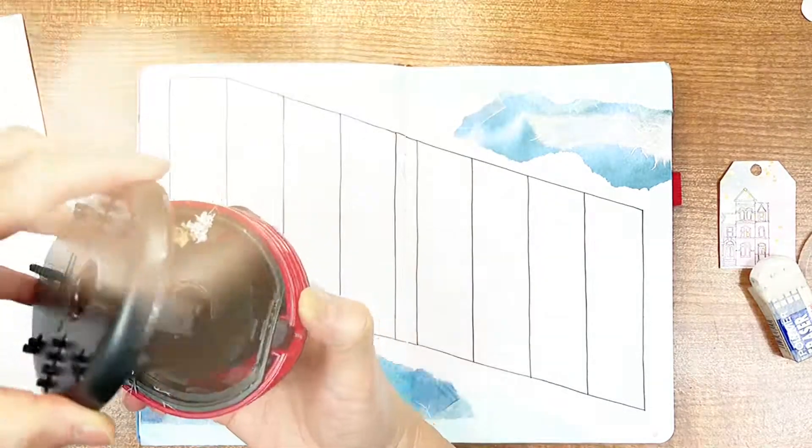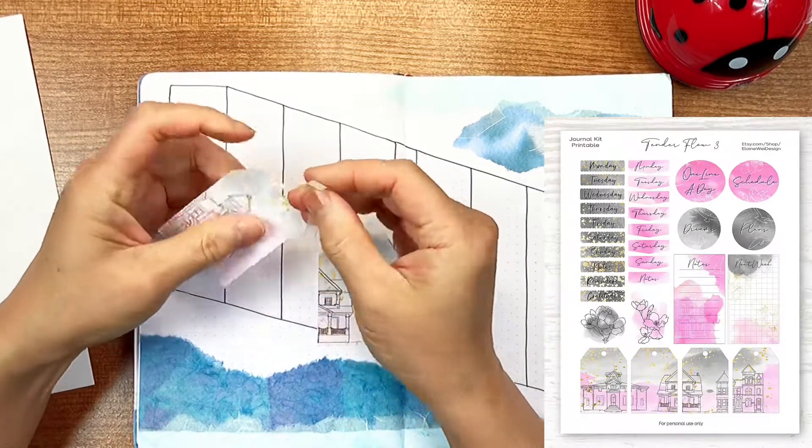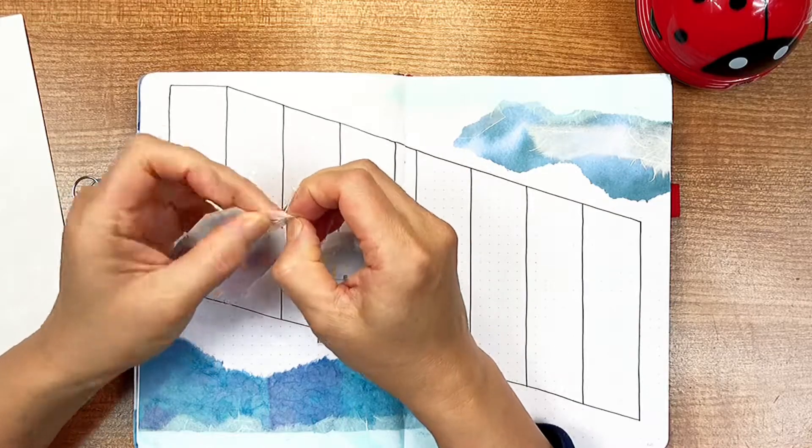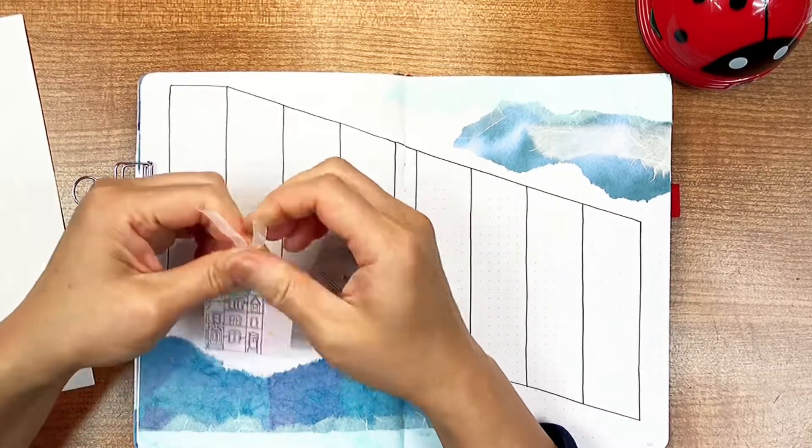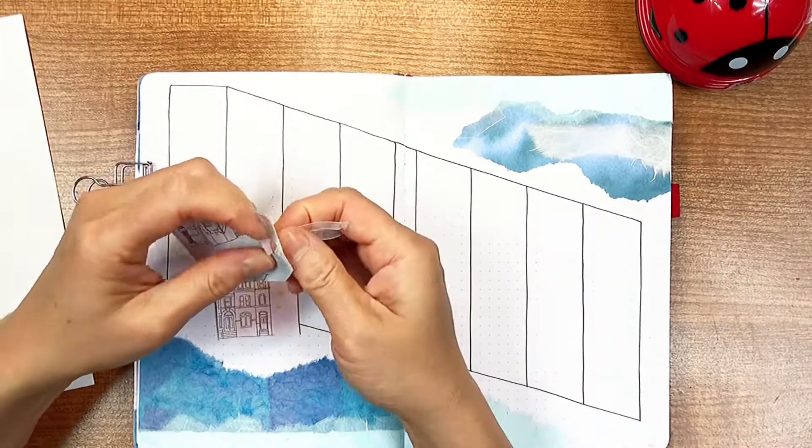Now, I'm using mulberry papers and some pictures from my Tenderflow printable that I made to look like tags to decorate my pages. Here, I'm tying some white ribbons to the tags to make them look more interesting.